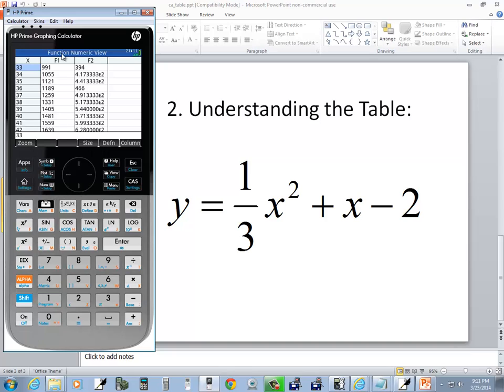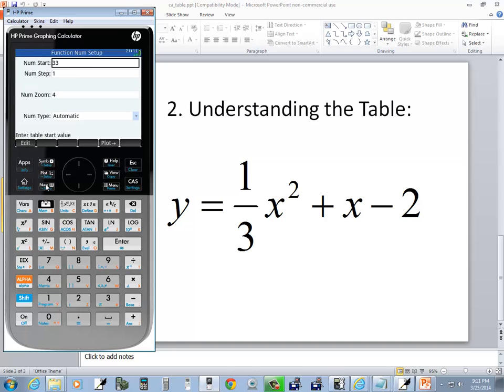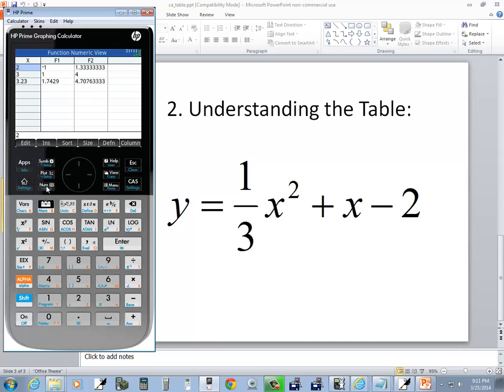That's not what I want to show you, though. Besides the different columns here, if I do Shift, Num, to go to the setup. Down here, you see the number type. It says Automatic. I'm assuming this is a touchscreen, either that or this is a mouse interface. But anyway, if I choose this, then I can choose Build Your Own. Really nice feature. I love this. If I now go back to Num, see we've got some options here.